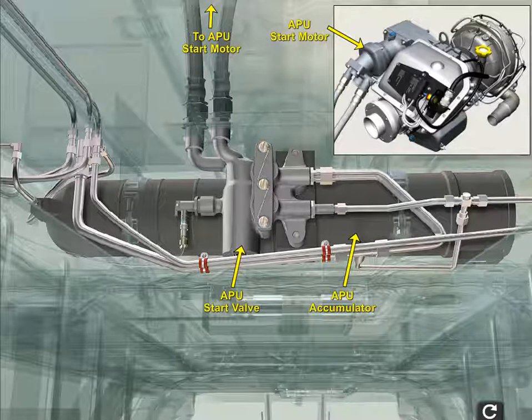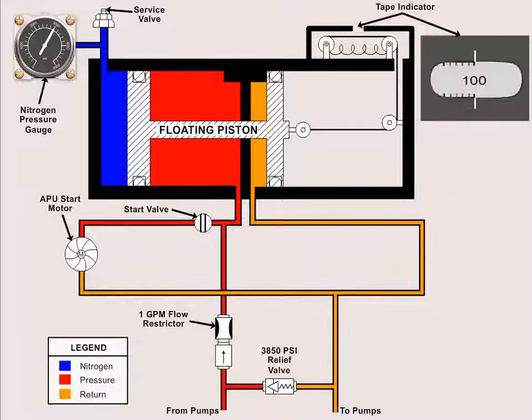It's going to take a combination of nitrogen and hydraulic pressure to start the APU. In order to start the APU, we need a combination that's going to reach 3000 psi. We'll get into how much nitrogen needs to be pre-charged because it depends on ambient temperature.